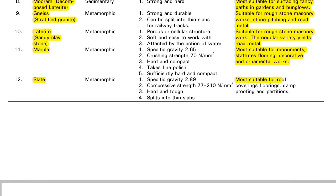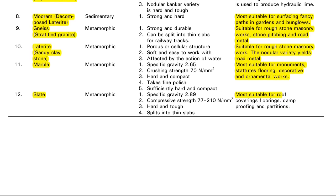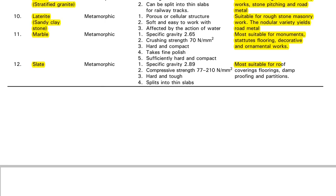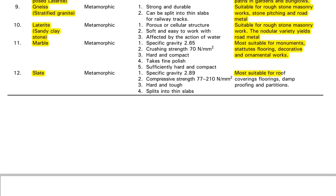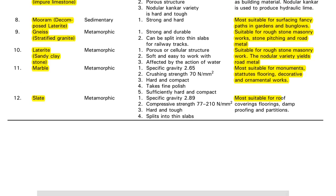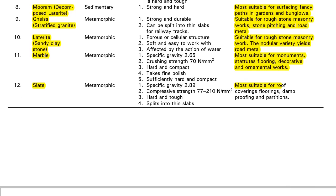Gneiss is a metamorphic rock and is also called stratified granite. It is suitable for rough stone masonry works, stone pitching, and road metal. Laterite is also suitable for rough stone masonry works. So both gneiss and laterite are suitable for rough stone masonry works.